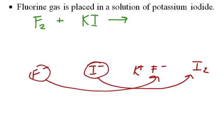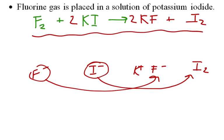F₂ plus KI turns into KF plus iodine. We go back and balance: we have two I's so we need 2 KI, and we have two F's so we need 2 KF. That is our finished equation. In this case, fluorine turns into a negative ion so it replaces the negative ion in our reactant.